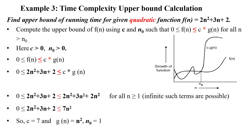Welcome to calculating the time complexity for a given function — the upper bound calculation. Here, we find the upper bound of running time for the given quadratic function 2n² plus 3n plus 2.